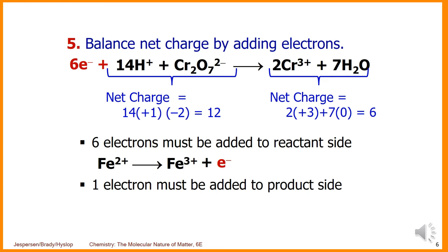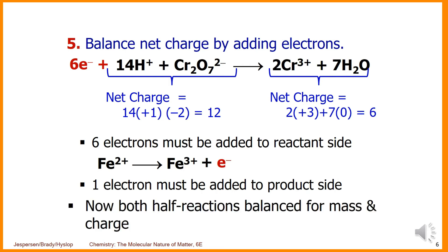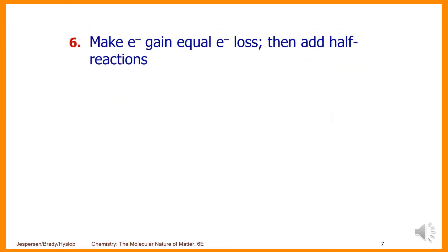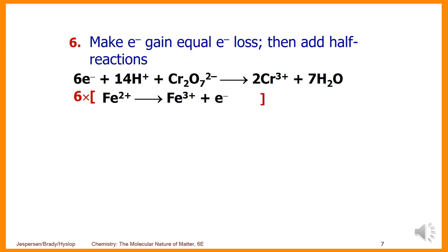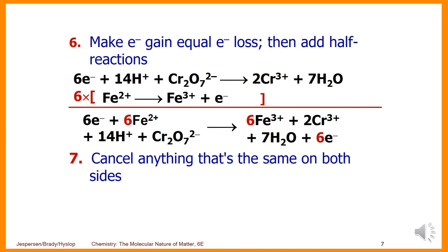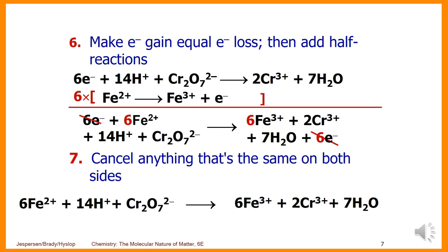For the Fe²⁺ to Fe³⁺ half-reaction, one electron must be added to the product side. Now both half-reactions are balanced for mass and charge. Step six: make electron gain equal electron loss, then add the half-reactions. We multiply the Fe reaction by six, then add the two half-reactions and cancel the six electrons. This gives the balanced equation.